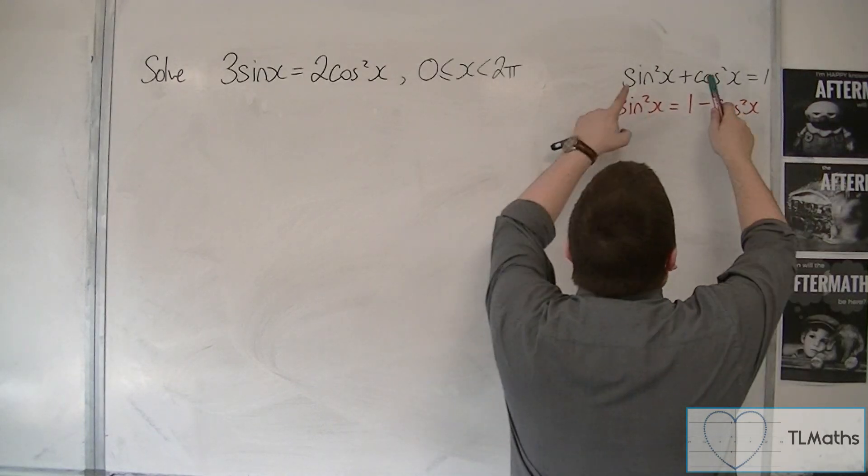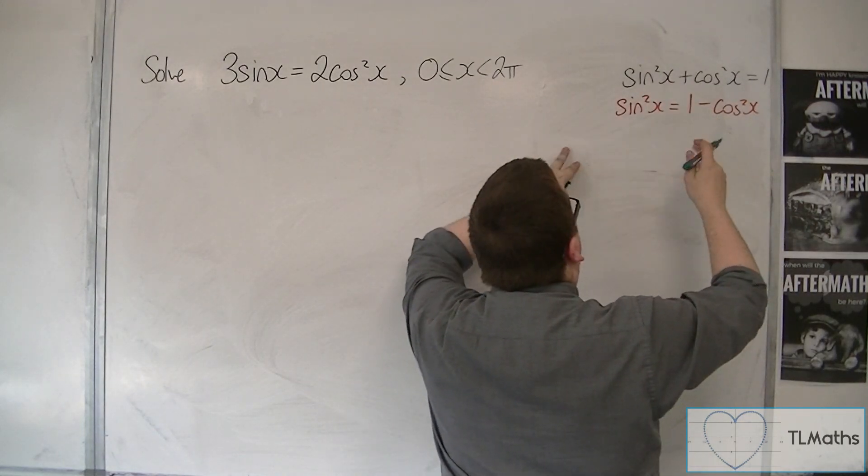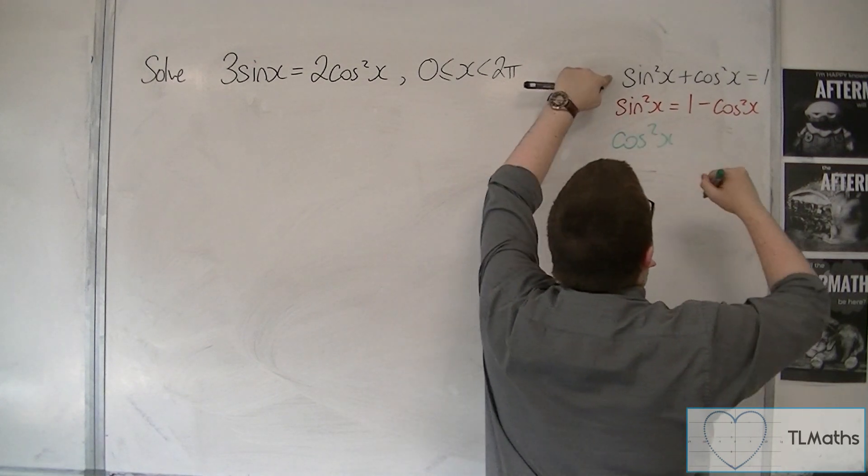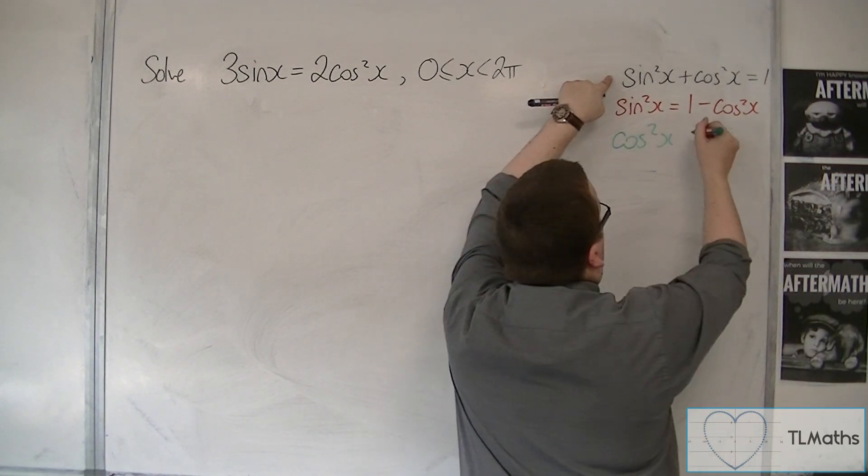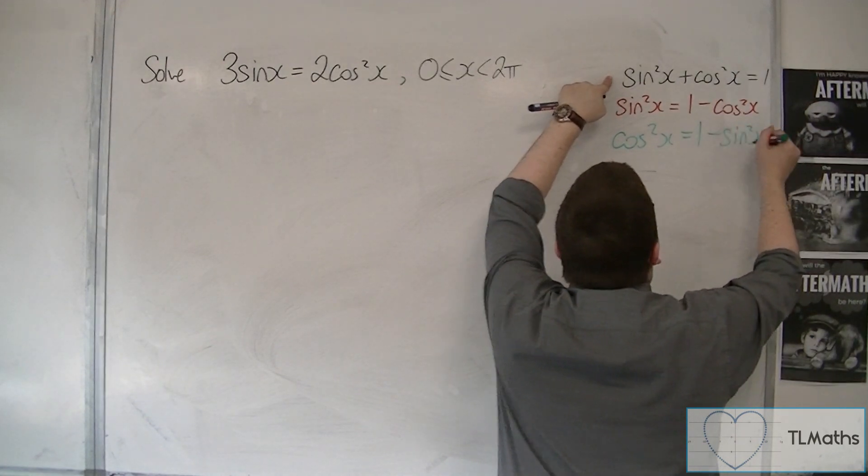So instead of subtracting cos squared from both sides, I'm going to subtract sine squared from both sides from the original equation. That gives me 1 minus sine squared to be cos squared.